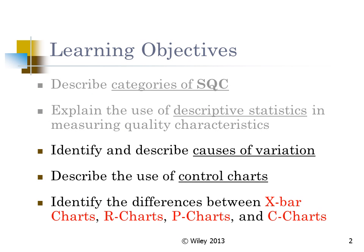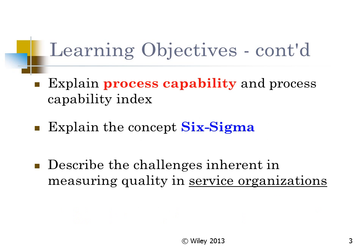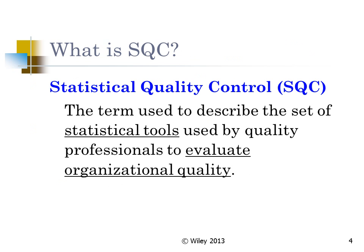In this chapter we will study SQC. The major topics include different types of control charts that quality engineers and quality managers use: X-bar charts, R charts, P charts, and C charts. In this video I will show you how to do an X-bar chart. We will also cover process capability and the Six Sigma philosophy.